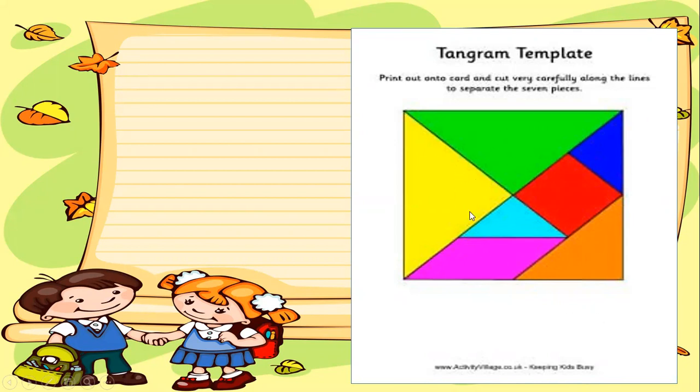You cut out the shapes - you need to cut out these seven shapes. Then you choose a picture, for example, you can choose a sailboat.